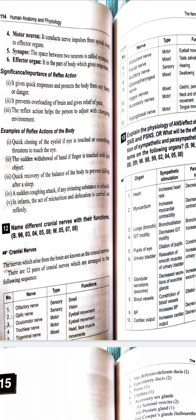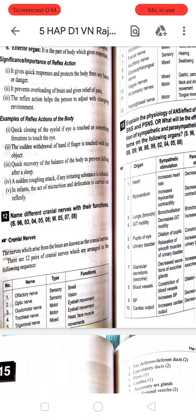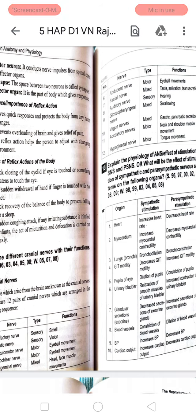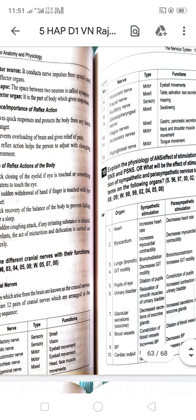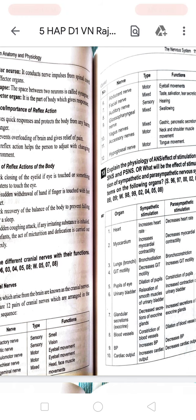The important functions: Olfactory is sensory for smell. Optic is sensory for vision. Oculomotor is motor for eyeball movement. Trochlear is motor. Trigeminal is mixed for face muscles. Abducent is motor for eyeball. Facial is mixed for salivation and tear secretion. Auditory is sensory. Glossopharyngeal is for swallowing. Vagus is for gastric and pancreatic functions. Accessory is for neck and shoulder movement. Hypoglossal is motor for tongue movement.